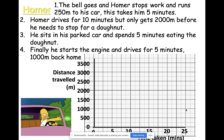Part one: the bell goes and Homer stops work and runs 250 meters to his car, taking him five minutes. In this first part we've got both a distance and a time given, so we just plot that on the graph. We're starting at zero minutes and 250 meters, so five minutes and 250 meters — we end up there.